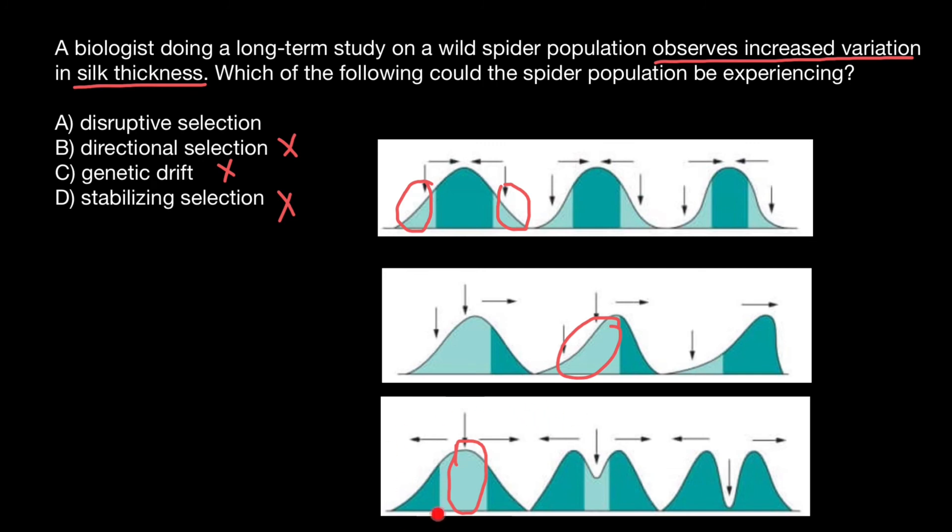For example, in this population, these spiders may catch flies which are very small, and thin silk would be preferable. Or there are also other bugs for which thick silk would be preferable. And intermediate would be an unfavorable phenotype, which is not as effective as these two extremes.